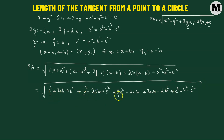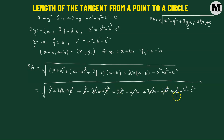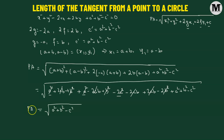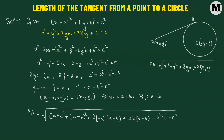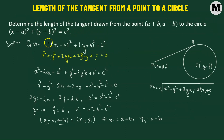Now several terms cancel out: the a squared terms — a squared, a squared, and negative 2a squared — cancel. The 2ab and negative 2ab terms cancel, and likewise negative 2ab and positive 2ab cancel. The b squared, b squared, and negative 2b squared terms also cancel. We are left with the square root of a squared plus b squared minus c squared. This is the length of the tangent drawn from the point a plus b comma a minus b to the circle given by x minus a whole squared plus y plus b whole squared equals c squared.